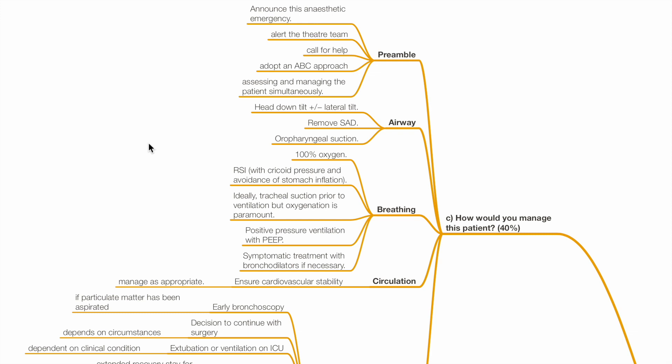Management of breathing includes providing FiO2 1.0, RSI with cricoid pressure and avoidance of stomach inflation. Ideally, tracheal suction prior to ventilation but oxygenation is paramount. Positive pressure ventilation with PEEP. Symptomatic treatment with bronchodilators if necessary.